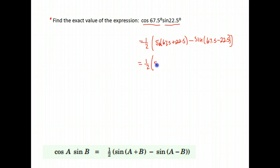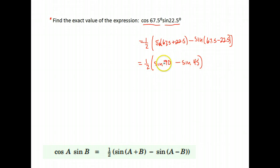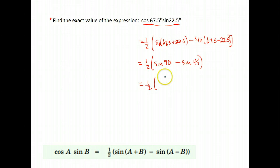So that means this would be equal to one-half of the sine of the two angles added together: 67.5 plus 22.5 gives us 90. Minus the sine of the two angles subtracted: 67.5 minus 22.5 gives us 45. When you're subtracting, that order does matter. The sine of 90 degrees is 1, and the sine of 45 degrees is the square root of 2 over 2.